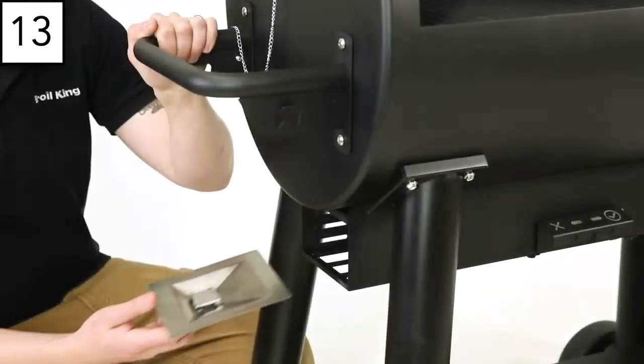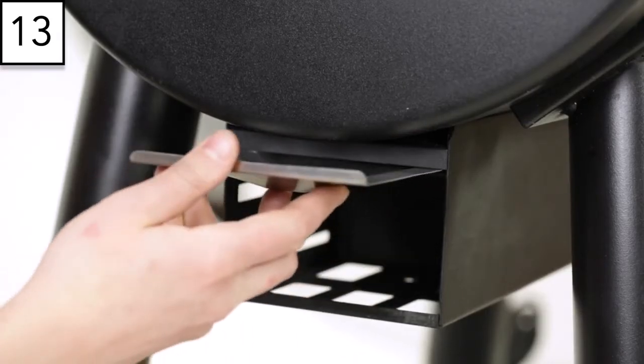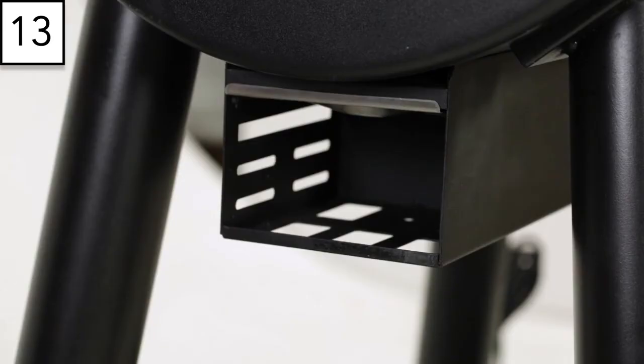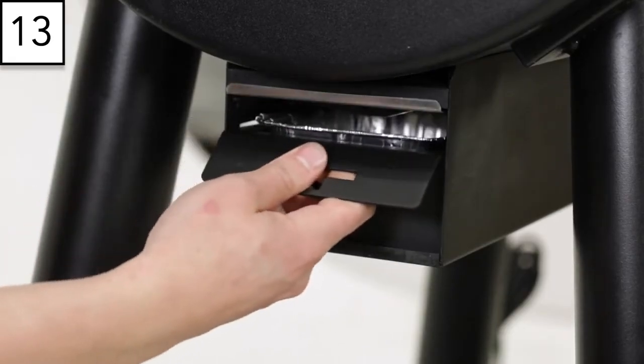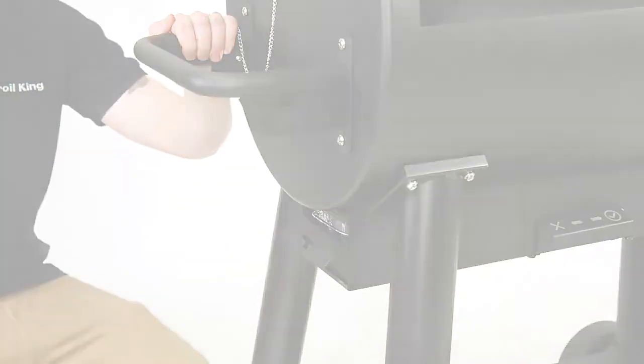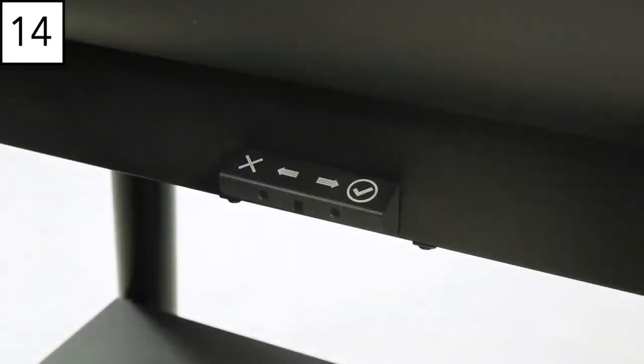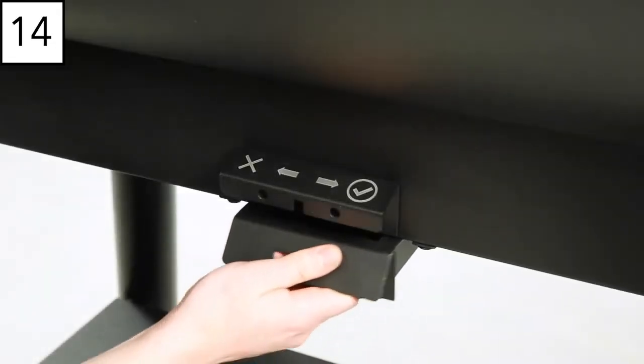Step 13. Insert the grease tray cover into place on the left side of the pellet grill. Insert the grease tray below with the provided foil liner for easy cleanup. Step 14. Insert the ash pan assembly at the front of the smoker.